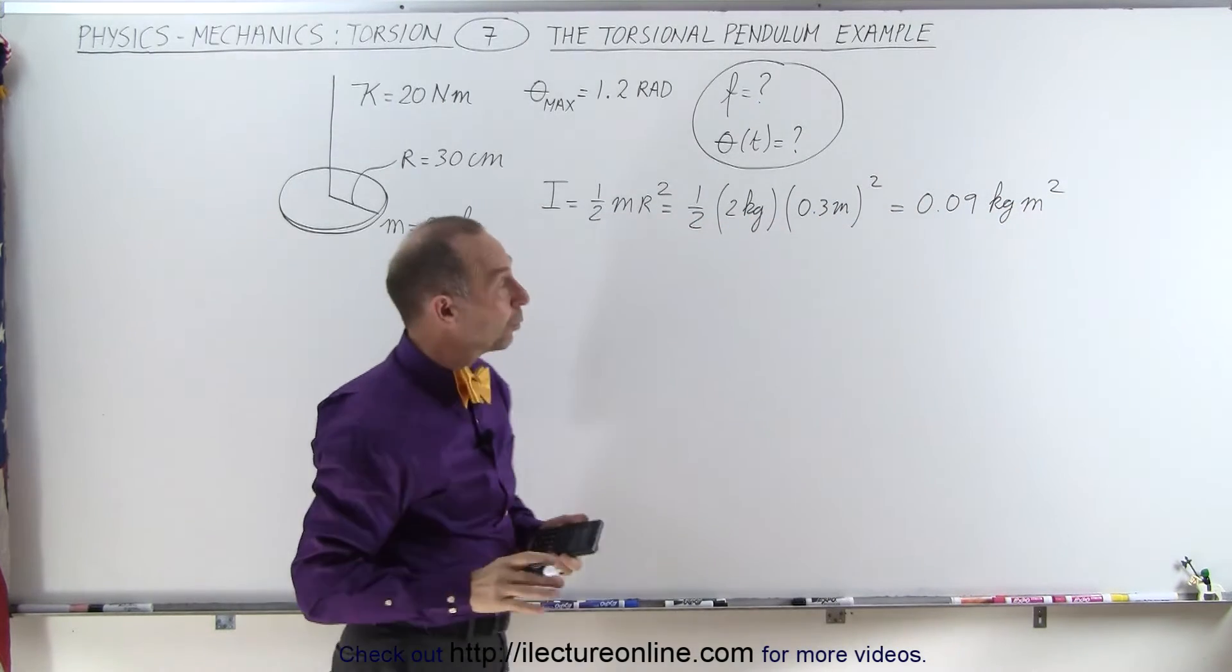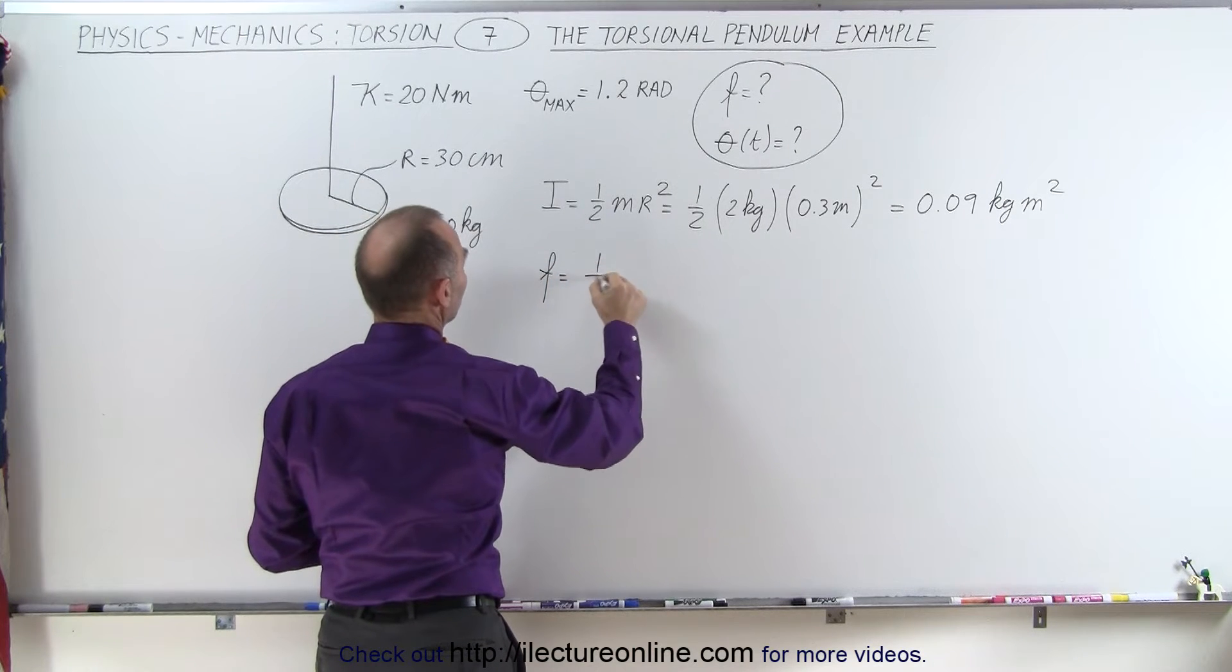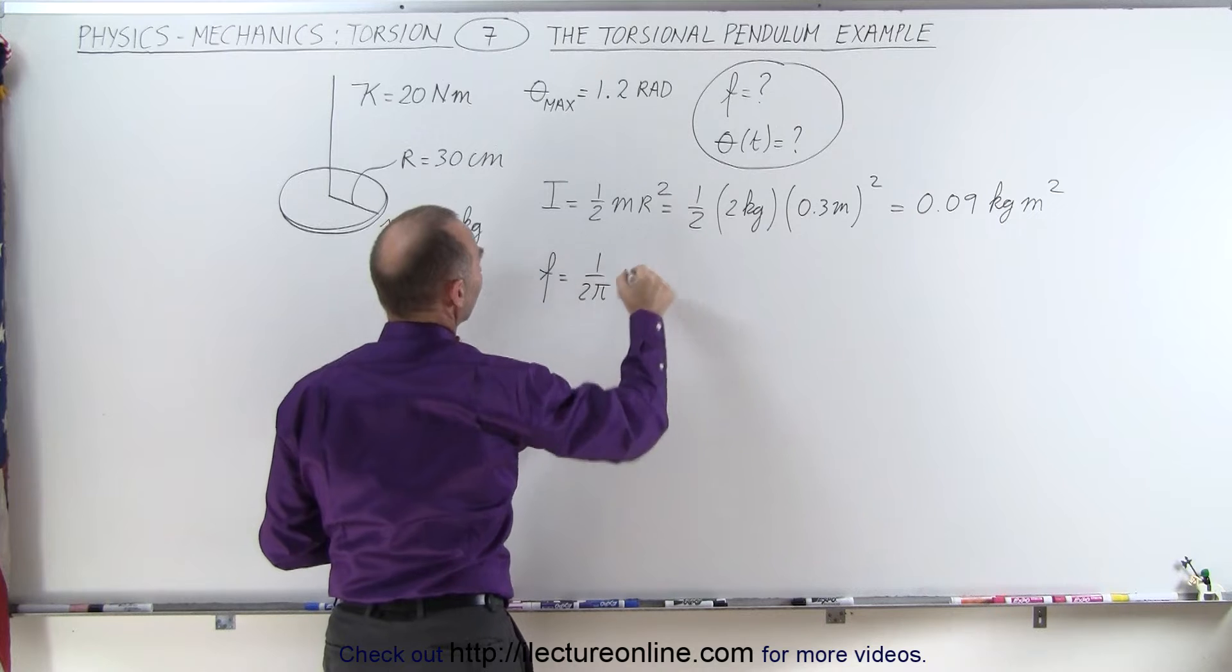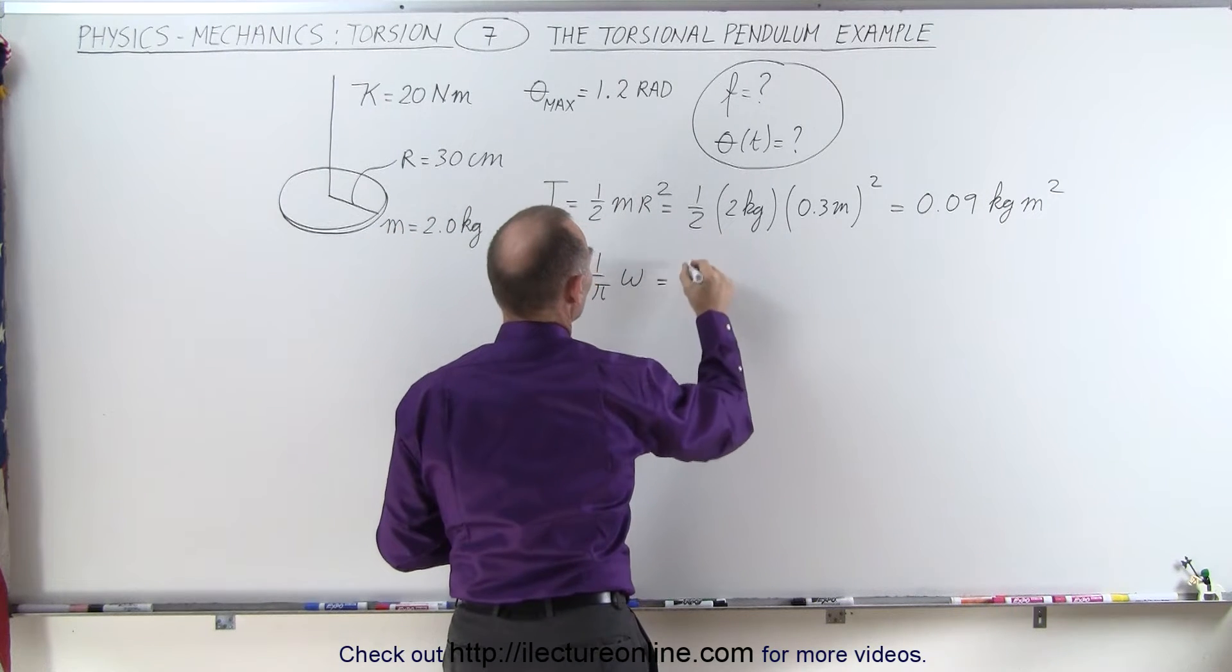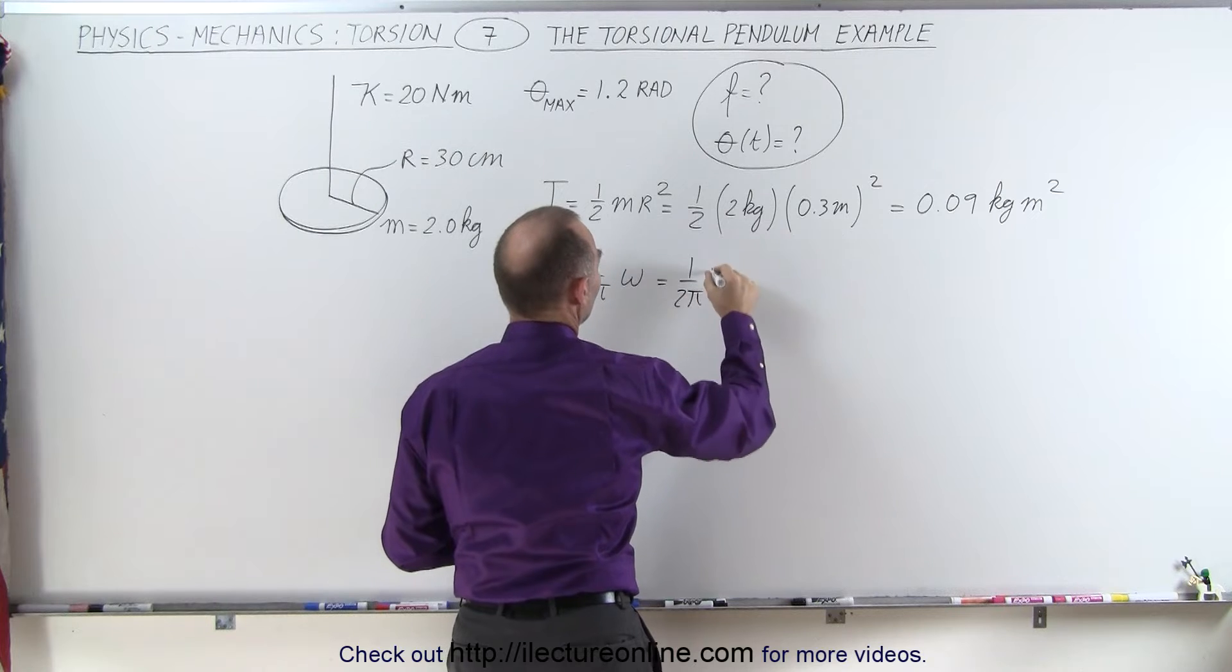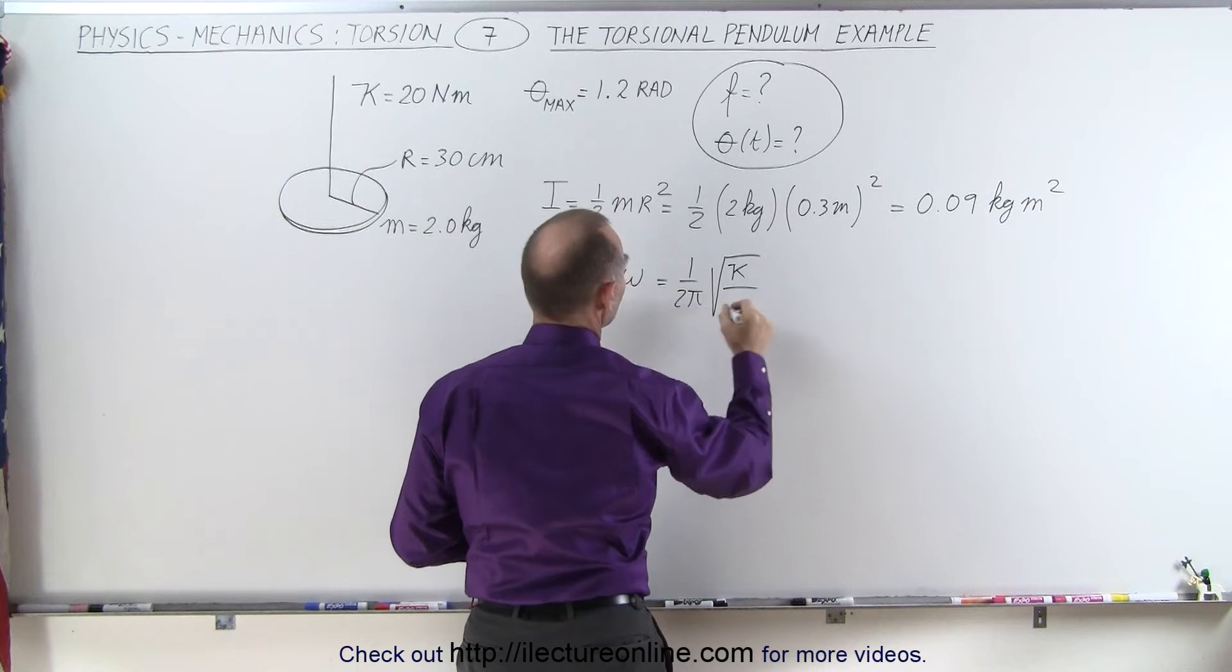Now we have that, we can find the frequency. The frequency is defined as 1 over 2π times the angular frequency. For torsional pendulums, that equals 1 over 2π times the square root of the torsional constant κ divided by the